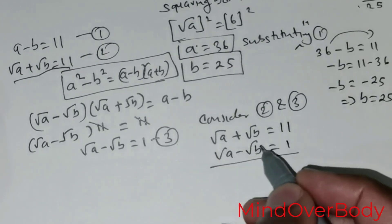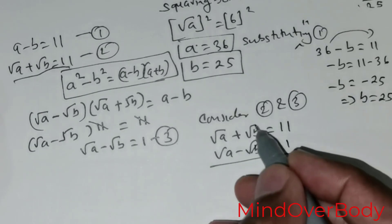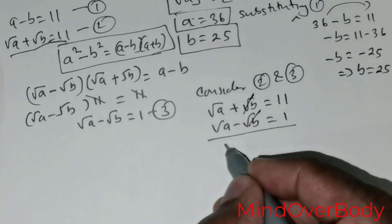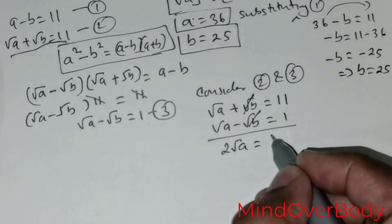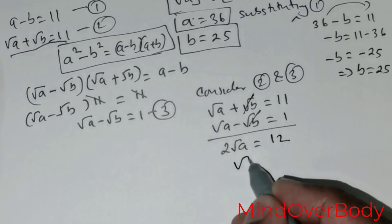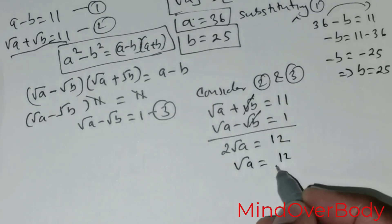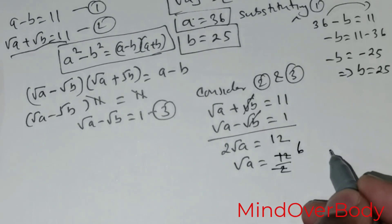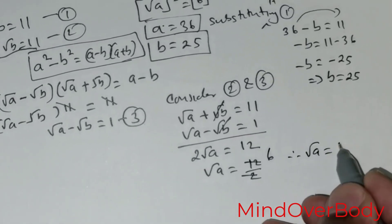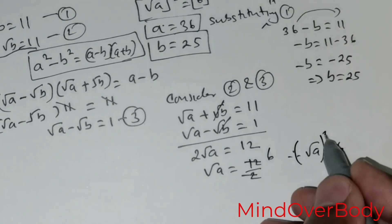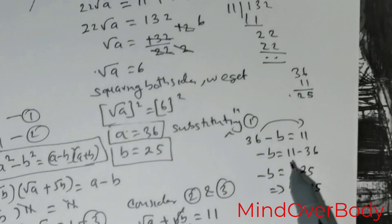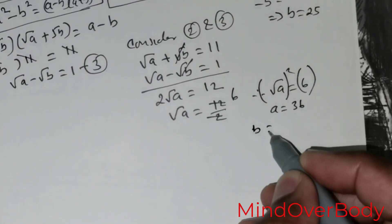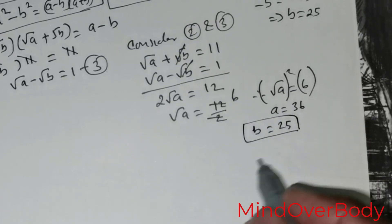Adding equations 2 and 3, root of B with a negative sign cancels, giving 2 times root of A equals 11 positive 1, which is 12. So root of A equals 12 divided by 2, and 2 divides 12 six times. Therefore root of A equals 6, and squaring both sides gives A equals 36 — the same result as before. Upon substitution, you get B equals 25. That is the second method.